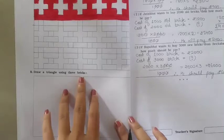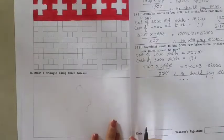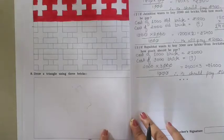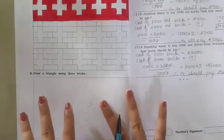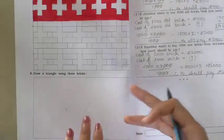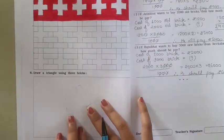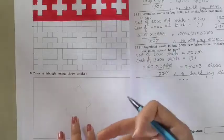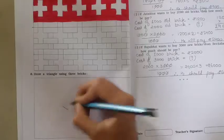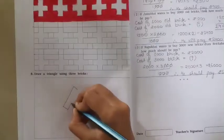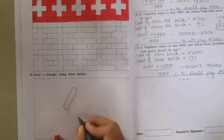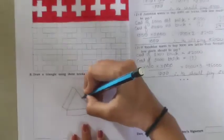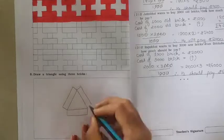Question number eight: draw a triangle using three bricks. What we want to make is a triangle using bricks. You can make a triangle pattern in different ways; you don't need to follow only one way. Here is what I have made: there is one brick, this is the second brick, and this is the third brick. Is it making a triangle? Yes.